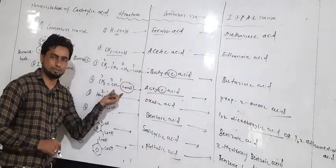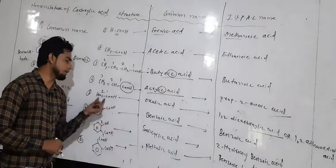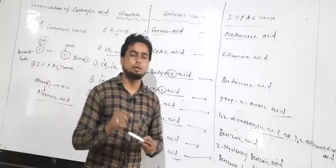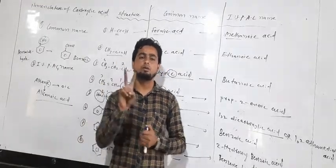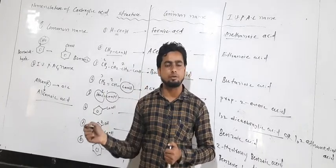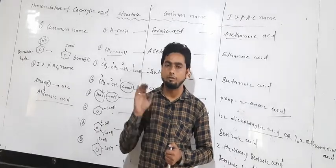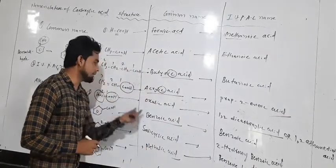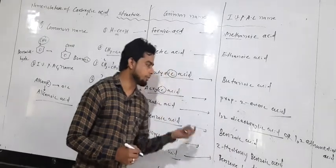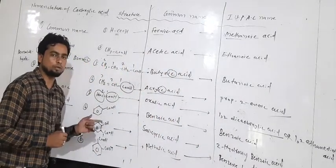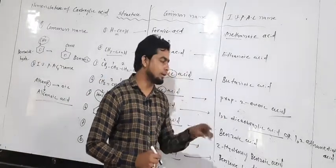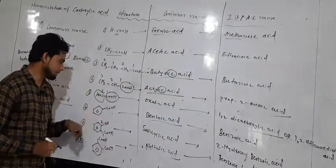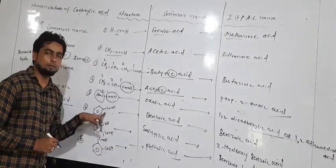Example five: this compound contains two oxalic groups, meaning two -COOH groups. For any compound containing two -COOH groups, the '-e' from alkane is retained as it is and we add the suffix '-dioic acid.' So the IUPAC name is ethane-1,2-dioic acid — two carbons is ethane, and two acid groups gives 'dioic acid.'